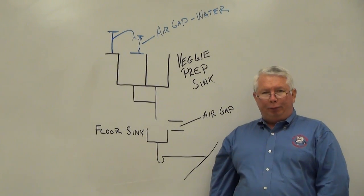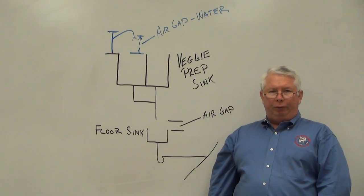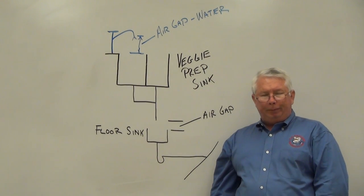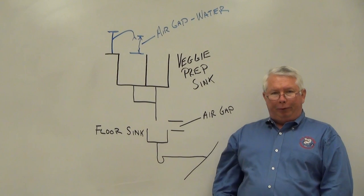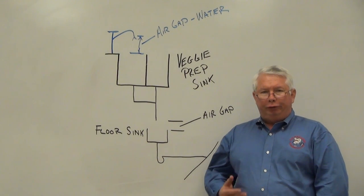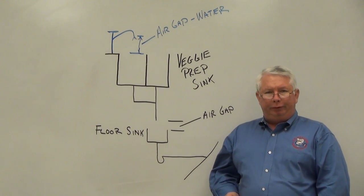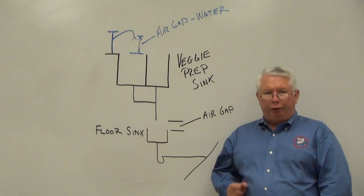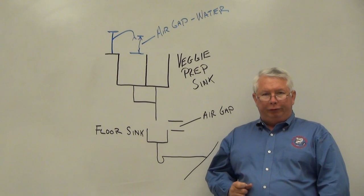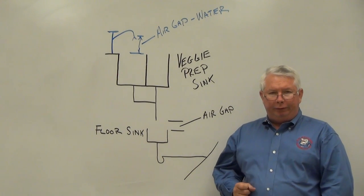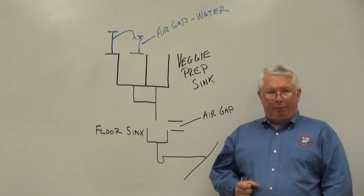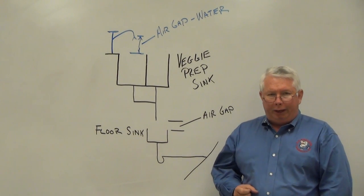The air gap also applies to the water distribution system. The purpose of the air gap in a water distribution system is to eliminate the potential of cross-contamination between the sanitary drainage system and the potable water supply.